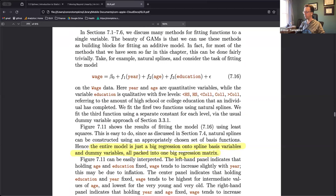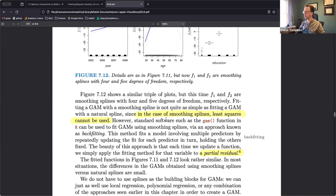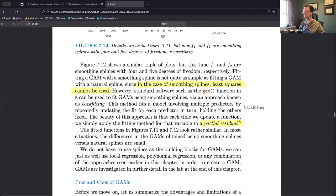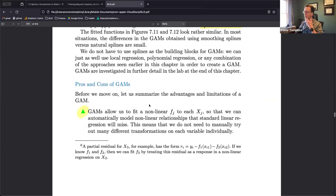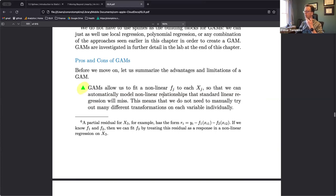This is a typical linear model with some function applied to each input. And this is a GAM with the smoothing splines. You can't use smoothing splines in least squares because of backfitting. I didn't have time to go into that. But the GAMs give you a partial residual which allows us to look at the effect of each variable.